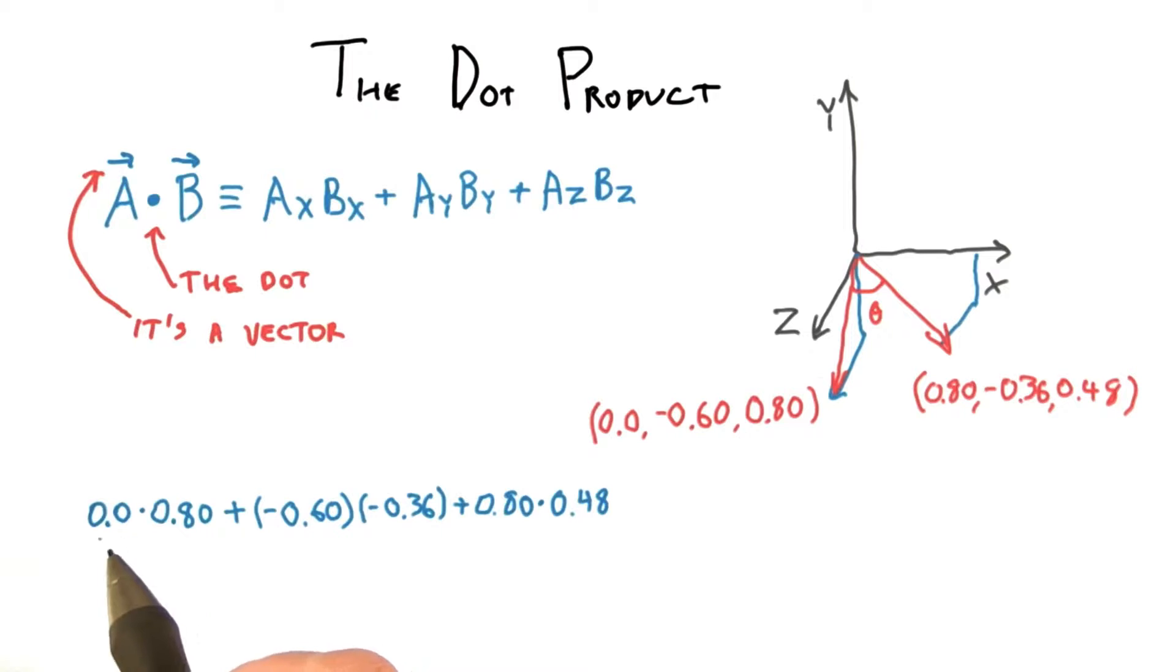The dot product is then 0 times 0.8, and so on. The next two values multiplied, and so on. This comes out to be these three terms added together, which equals 0.6.